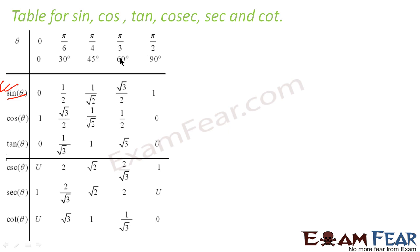For cos: cos 0° = 1, cos 30° = √3/2, cos 45° = 1/√2, cos 60° = 1/2, cos 90° = 0. For tan: tan 0° = 0, tan 30° = 1/√3, tan 45° = 1, tan 60° = √3, and tan 90° is undefined. Tan is undefined at 90° because tan = sin/cos, and 1/0 is undefined.